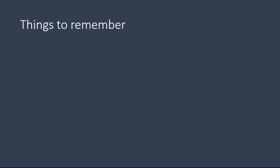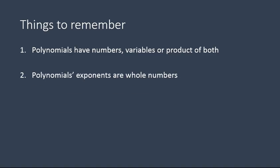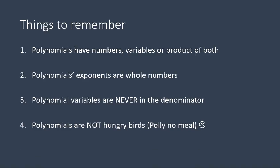Four things to remember at the end of our lesson. Number one, polynomials have numbers, variables, or a product of both. Number two, polynomials' exponents are whole numbers, not fractions or negatives. Polynomial variables are never in the denominator. You don't have the variables in the denominator. And, polynomials are not hungry birds. Get it? Polynomial? Haha! All right, that was ridiculous. Anyway, hope you did enjoy this lesson and it was helpful for you in learning what a polynomial is and what a polynomial is not. Have a wonderful day.